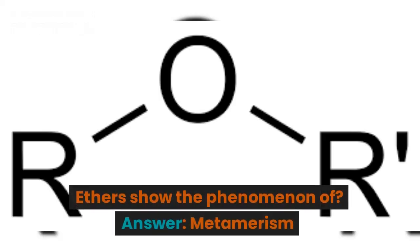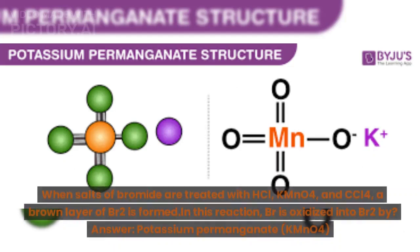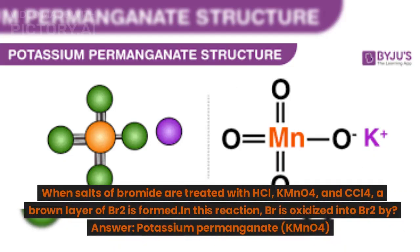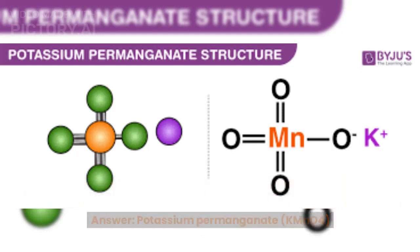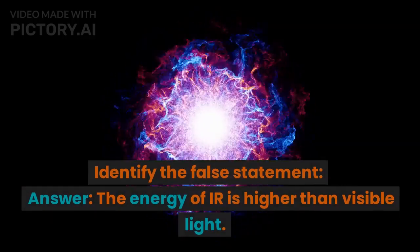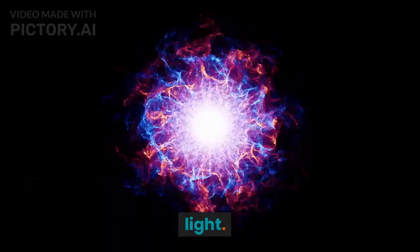Ethers show the phenomenon of? Answer: metamerism. When salts of bromide are treated with potassium permanganate and carbon tetrachloride, a brown layer of Br₂ is formed. In this reaction, bromide is oxidized into Br₂ by potassium permanganate. Identify the false statement. Answer: the energy of IR is higher than visible light.